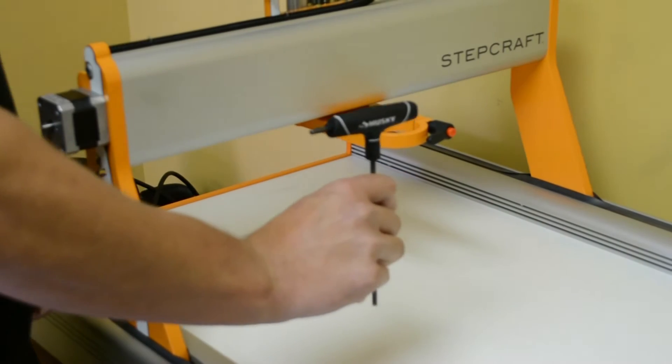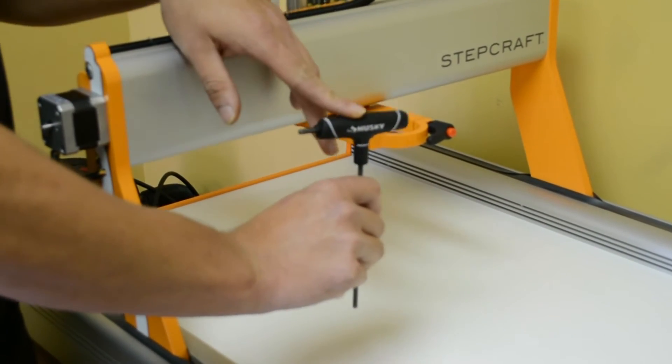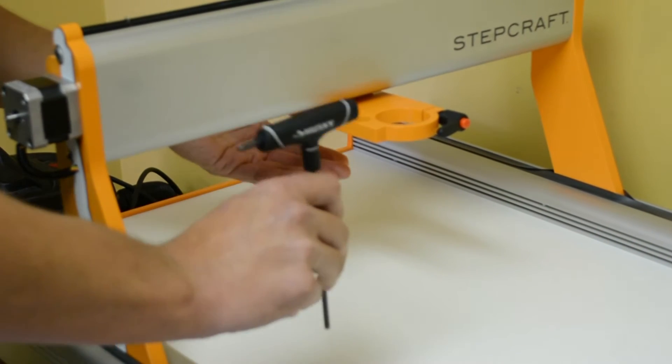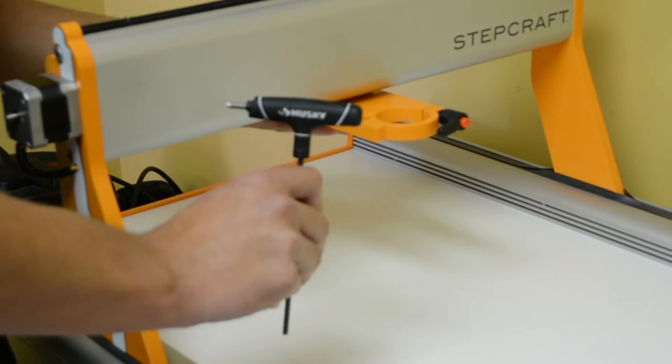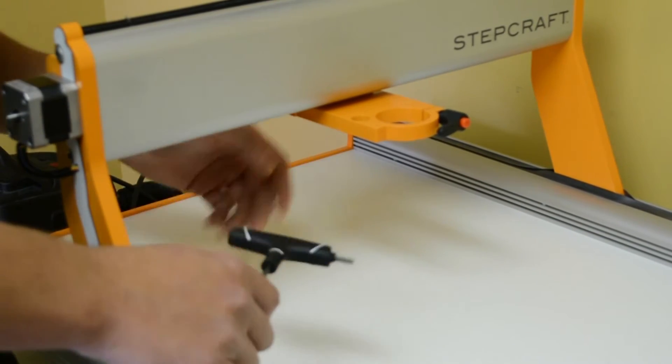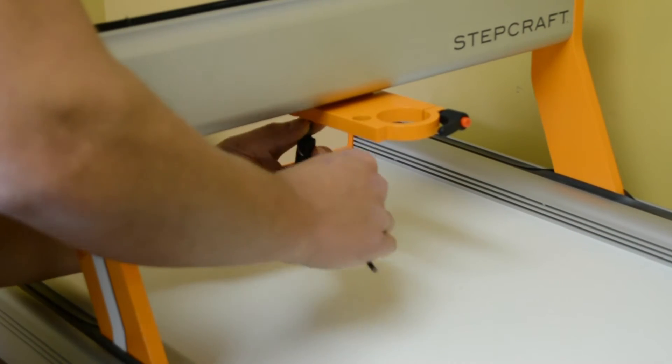First we need to take off the old bracket. This is going to be using a four millimeter Allen, and when you do this you're going to want the Z height up so that you can fit your tool underneath and have some working room.